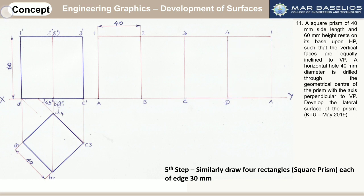If it was a pentagonal prism, we would be getting five rectangular faces. So we have drawn the top view, the front view, and the development of our square prism.